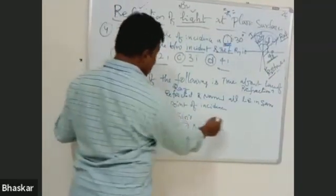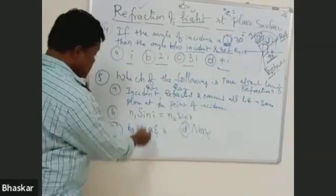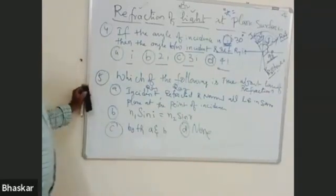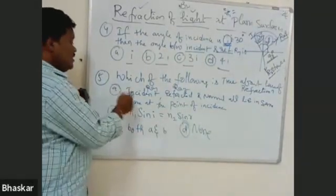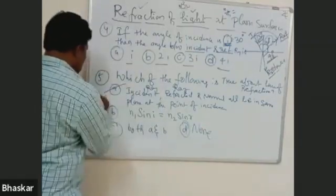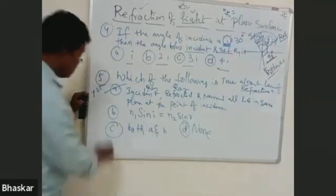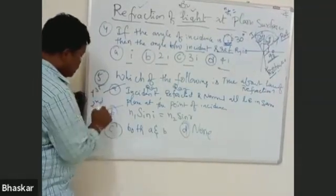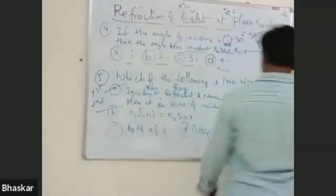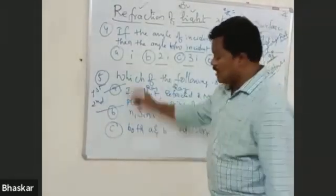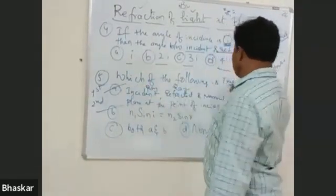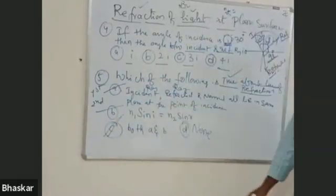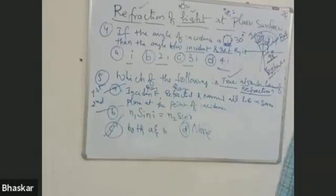N1 sin I is equal to N2 sin R. Option C is both A and B. Option D is none of these. Both A and B. Option A is correct - this is the first law of refraction. Option 2 is the second law of refraction. As for the law of refraction, there are two laws: first law and second law. Both laws are correct. Which of the following is true means both are true - A and B. Option C is correct. Okay, so like this you are supposed to...